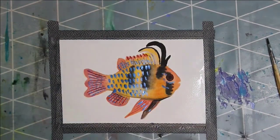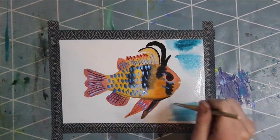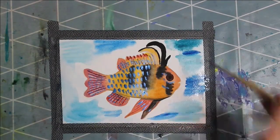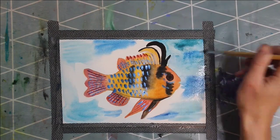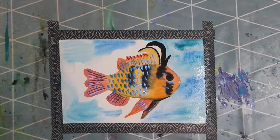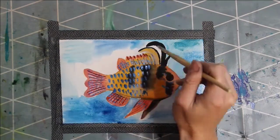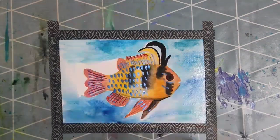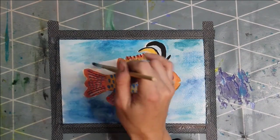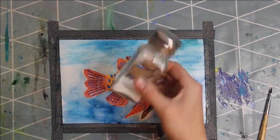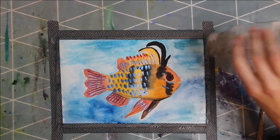For the background I am wetting everything. Then I use different shades of blue and blend them together. As a special effect I used some salt to give the background a bubble structure.